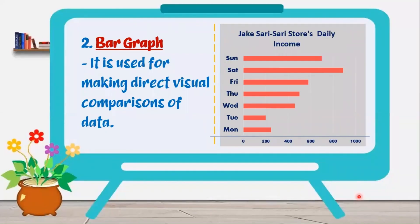Next is a bar graph. It is used for making direct visual comparisons of data. If our goal is to compare data, then we need a bar graph.